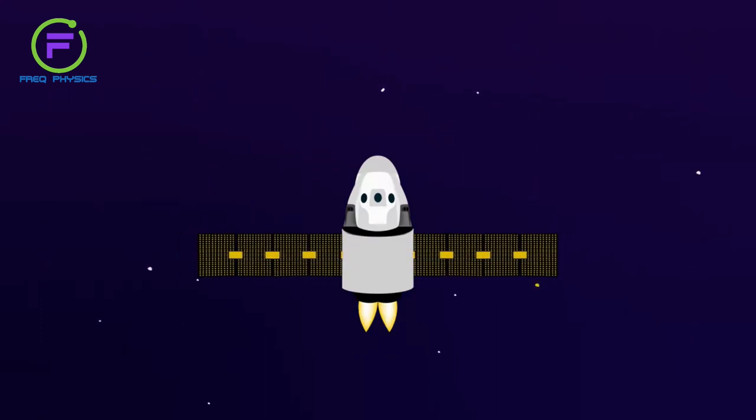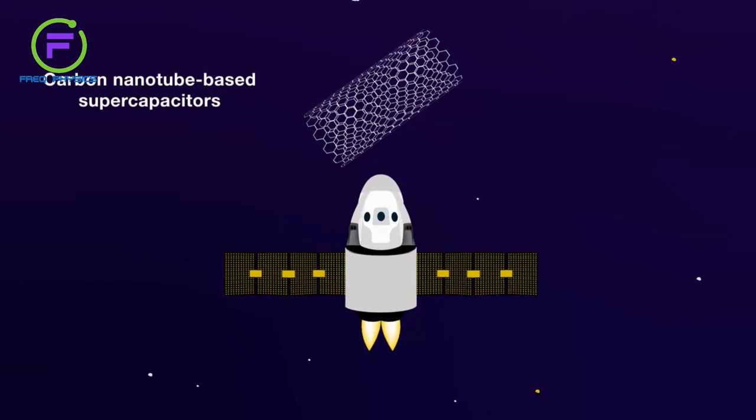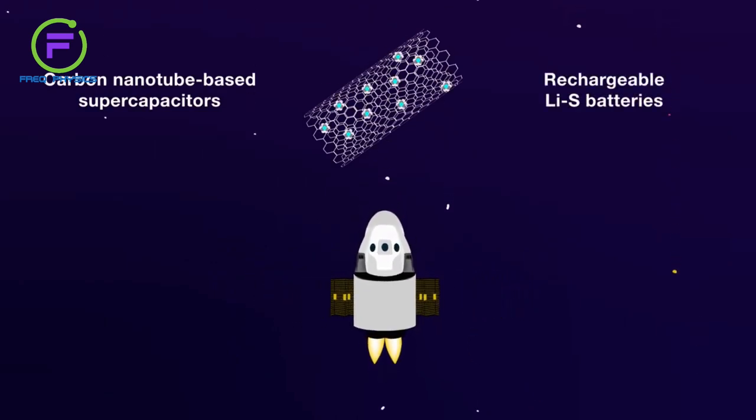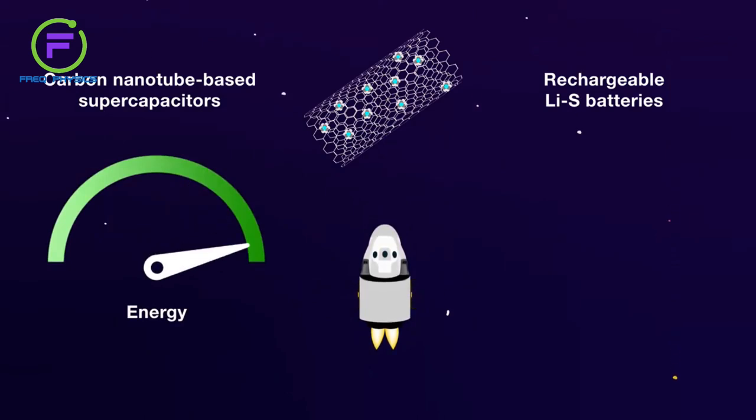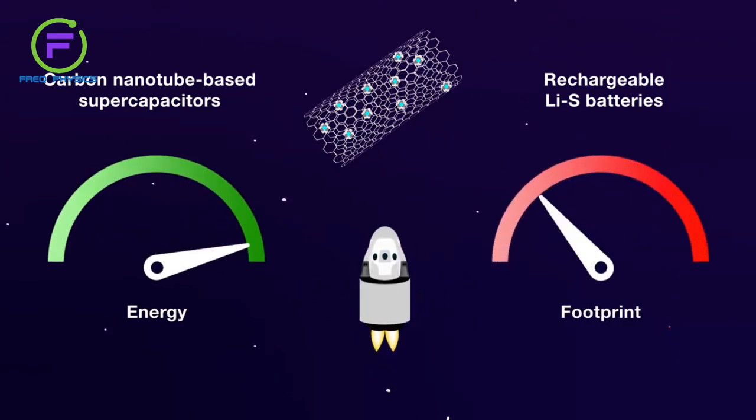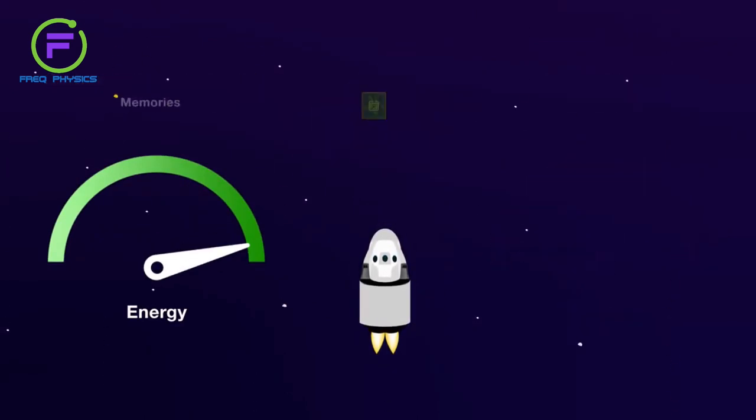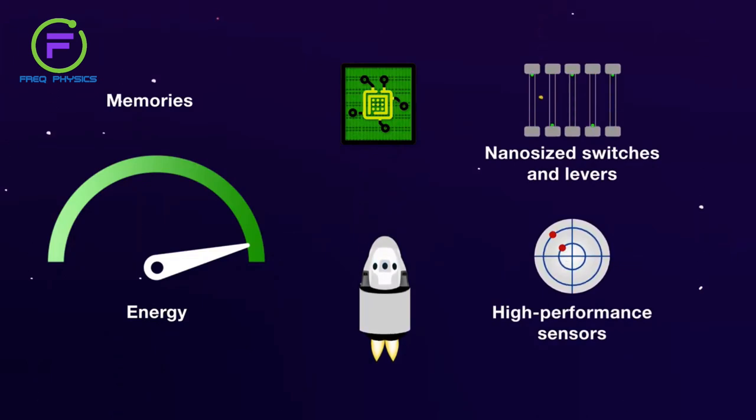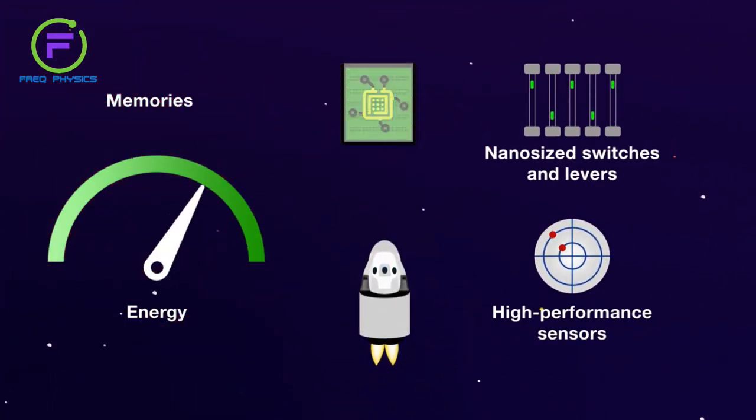With respect to energy storage, work on carbon nanotube-based supercapacitors and rechargeable lithium-sulfur batteries is expected to yield systems with dramatically improved energy density, while reducing the footprint of the electronics they power. Similarly, memory storage devices based on the mechanical movement of nano-sized switches and levers, and high-performance sensors based on nanomaterials are expected to provide electronics that are immune to radiation and consume low levels of power.